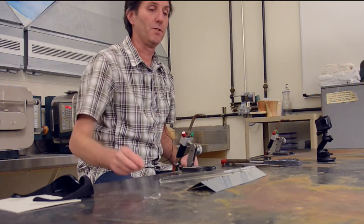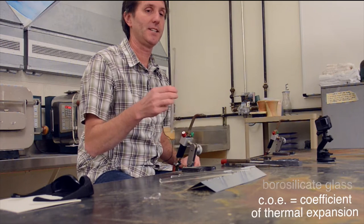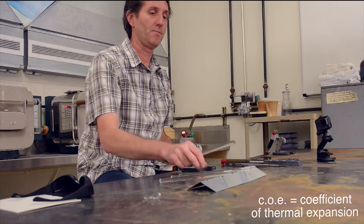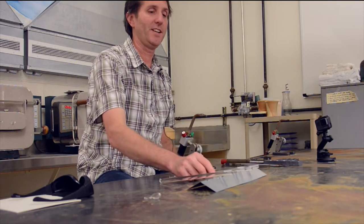This is with borosilicate glass, COE 3030, and we're going to use some 11 mil and some 7 mil.